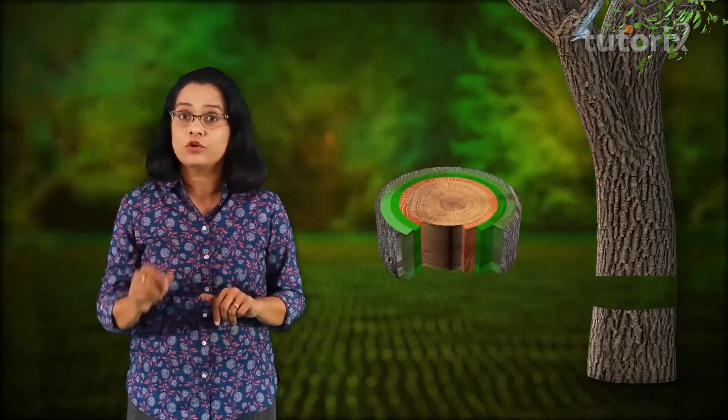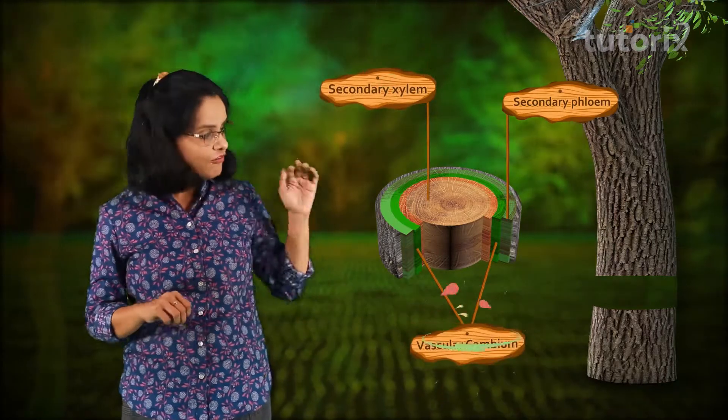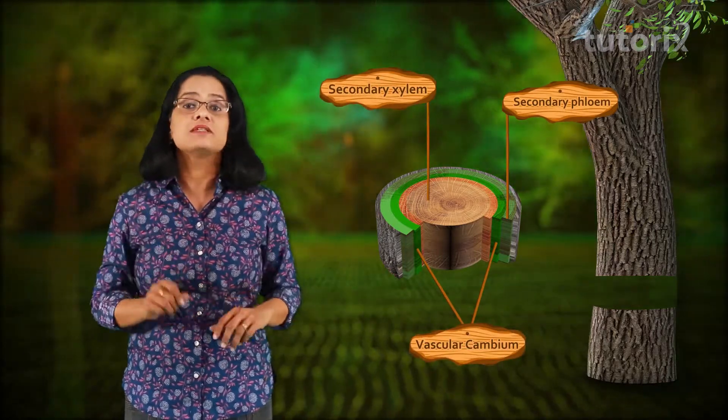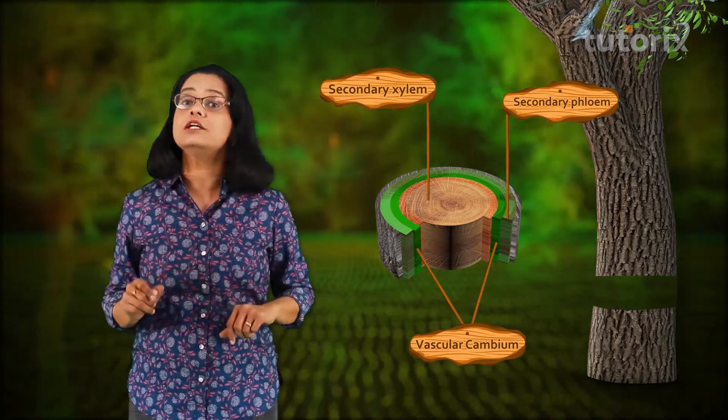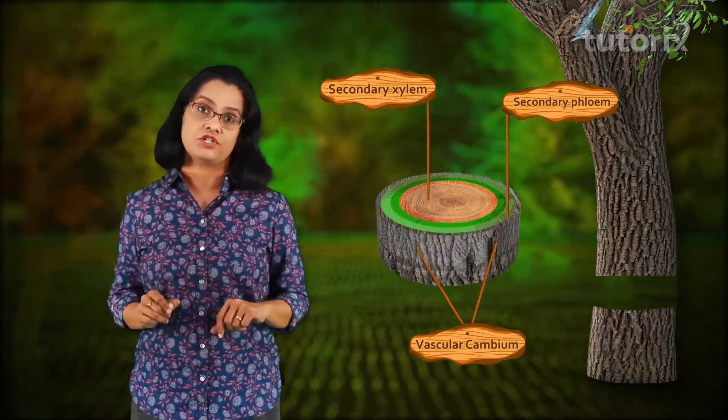We discussed that trees become hardy and sturdy because of secondary growth, and we talked that secondary vascular tissues are formed during secondary growth by the activity of vascular cambium, which causes an increase in the thickness of the trees. But increase in girth alone is not sufficient — there has to be some mechanism to protect the plant from outside.